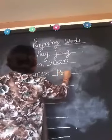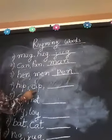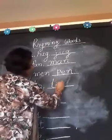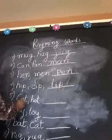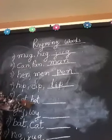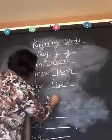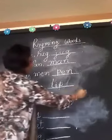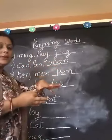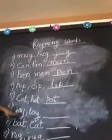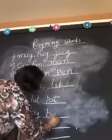You did words like pan. H-I-P, hip. D-I-P, dip. Then L-I-P, lip. Okay. Then C-O-T, cot. H-O-T, hot. You can write D-O-T, dot. You can write P-O-T, pot. And J-O-Y, joy. T-O-Y, toy. Then B-O-Y, boy.